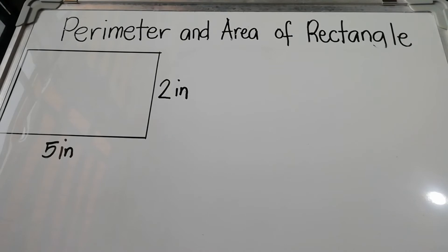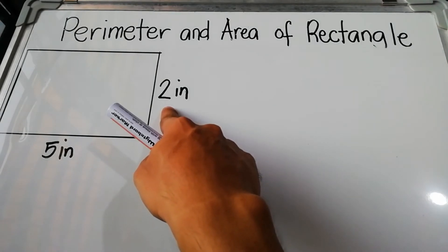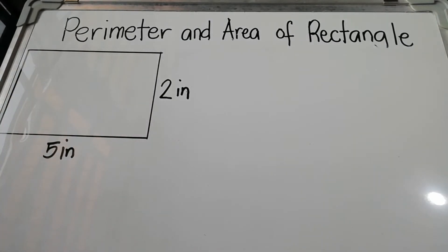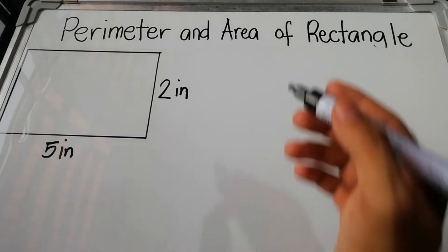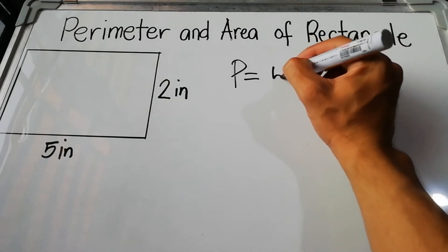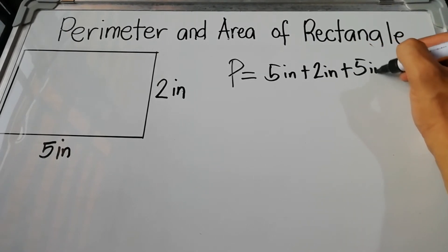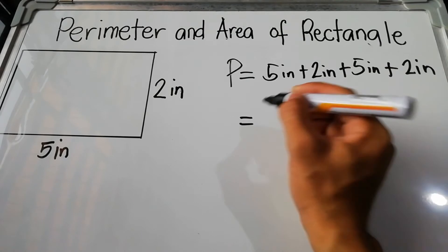Let's have example number two, with measurements of 5 inches for length and 2 inches for width. Without writing the other measurements, we know the opposite sides are equal: the opposite side of 5 inches is 5 inches, and the opposite side of 2 inches is 2 inches. To find the perimeter, add all sides: 5 + 2 + 5 + 2 inches.